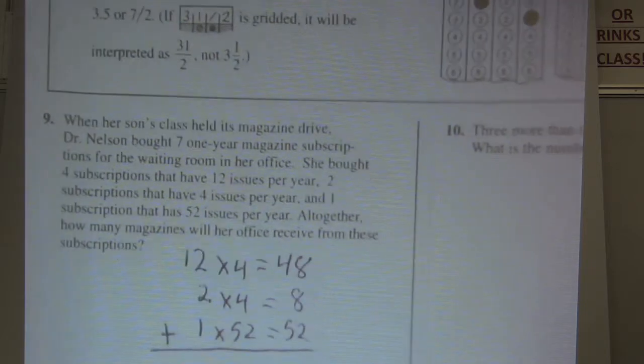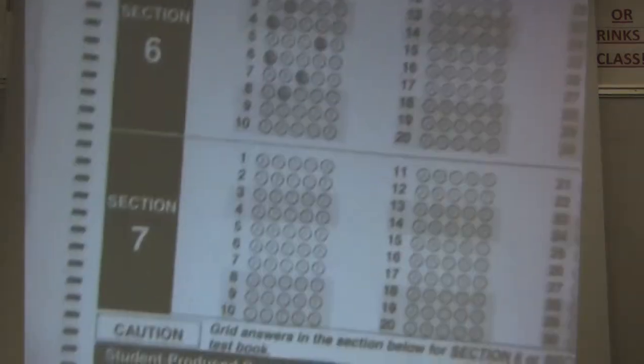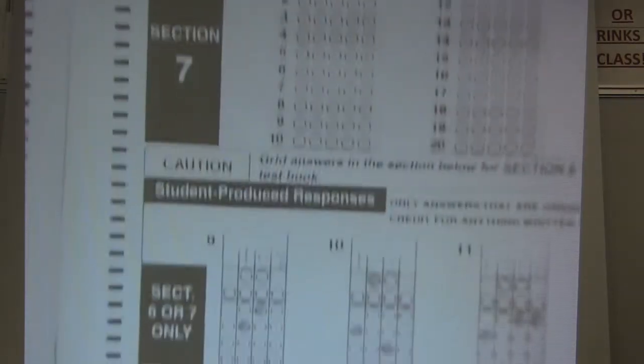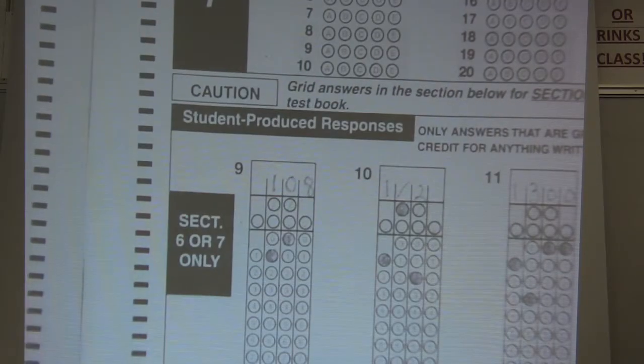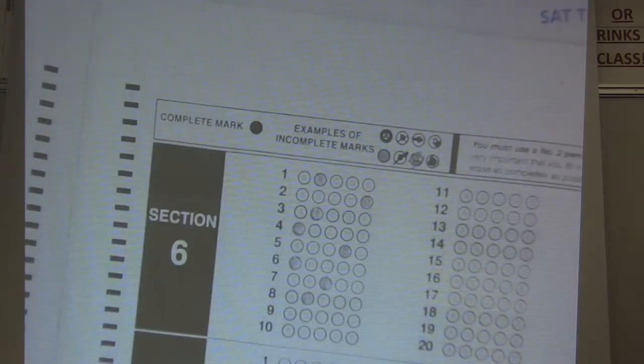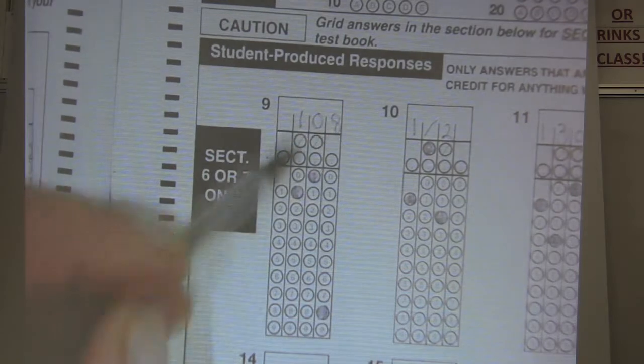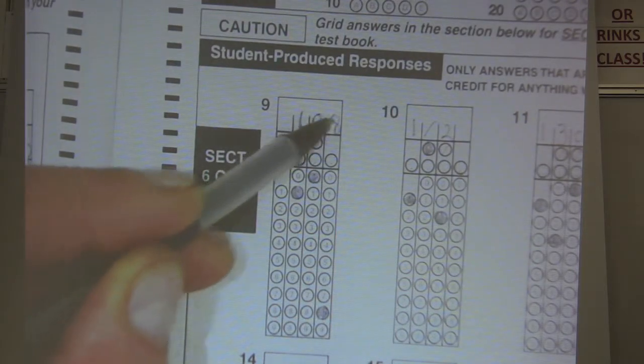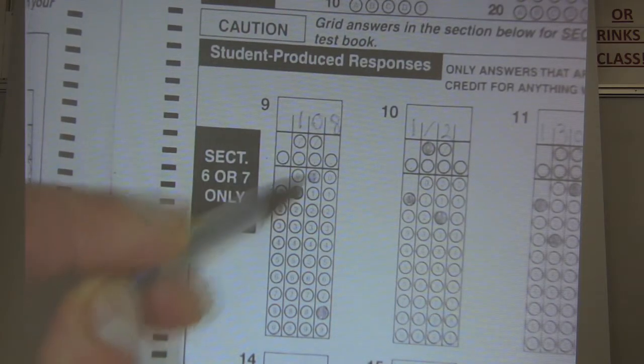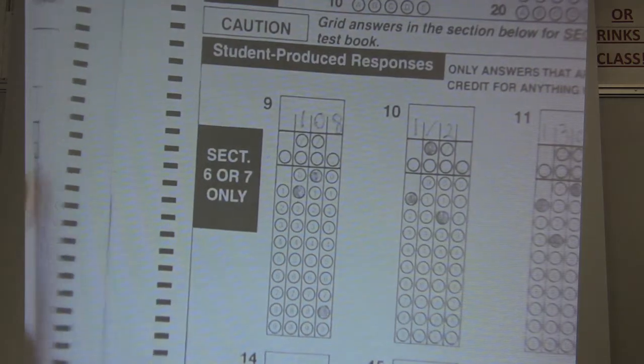Okay, so now when I take my answer document, you can see down here, I've bubbled in. This is for Section 6. So, here's my answers for Section 6 up here, and then I go down and you bubbled in 108. So, I bubbled in 1, the 0, and the 8. So, 1, 0, 8.